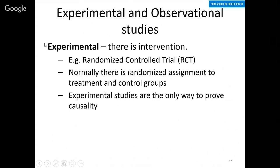The key aspect of an experimental study is that there is intervention. You're not just observing individuals from the population — you are actually randomly intervening on some of them. This is what randomized controlled trials are, and it eliminates the possibility of confounding because you control the assignment of your treatment or intervention randomly and you know what those probabilities are. Because you eliminate the possibility of other things affecting your outcome by randomly assigning them, you can prove causality in experimental studies.